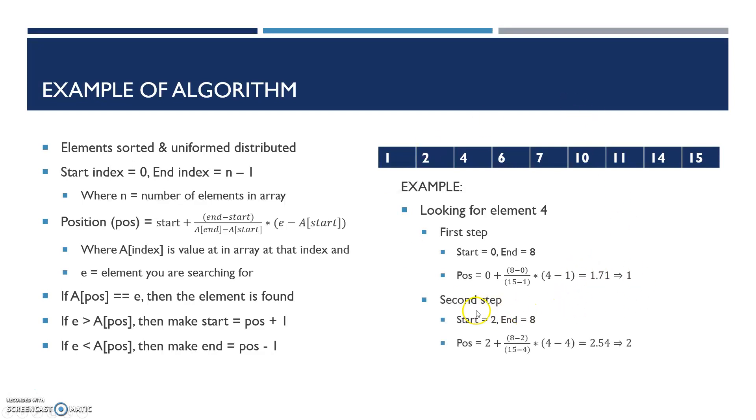The second step in searching for 4 is you change the start value, and that becomes 2. At position 1, that is 2. Since 2 is less than 4, and 4 is greater than 2, that makes 1 plus 1. This is where you get position 1 and add 1.